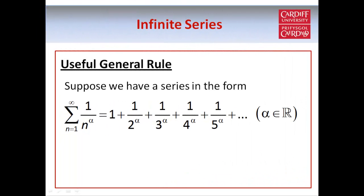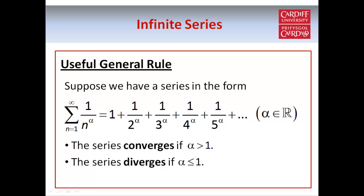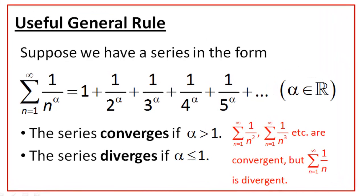So here's a very useful general rule. If we have a series 1 over n to the power alpha where alpha is some real number, it doesn't necessarily have to be an integer, the series converges if alpha is strictly greater than 1 and it diverges if alpha is less than or equal to 1. So this means if we have 1 over n squared or 1 over n cubed inside the summation for example, in these cases the series will be convergent because the value of alpha is greater than 1. But on the other hand if alpha is equal to 1 we have the harmonic series which as we've just stated is divergent.